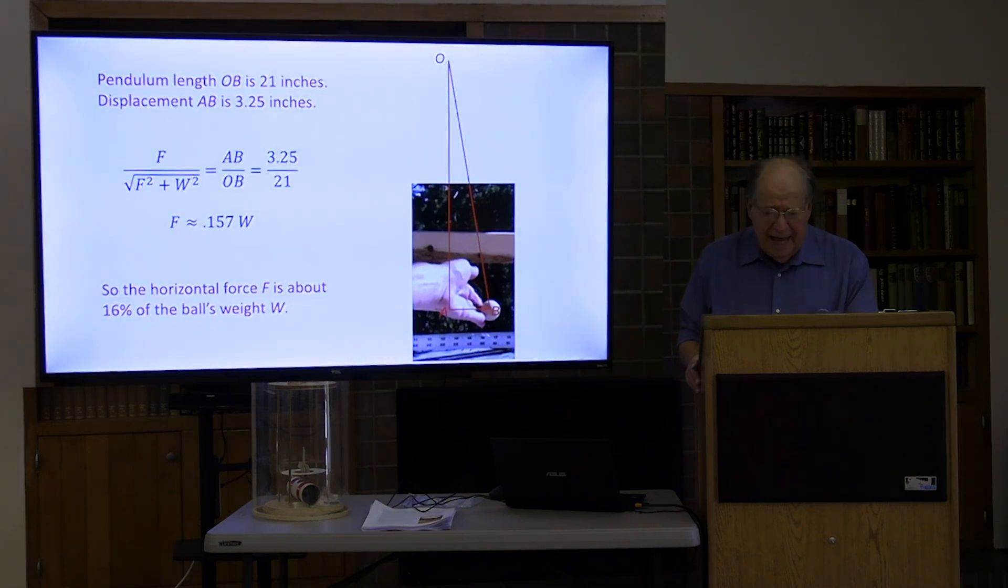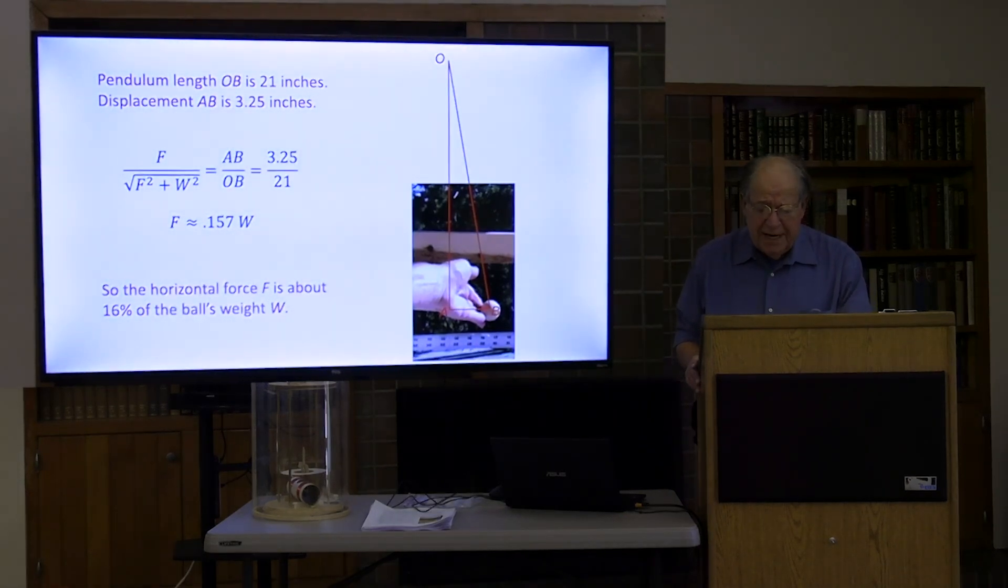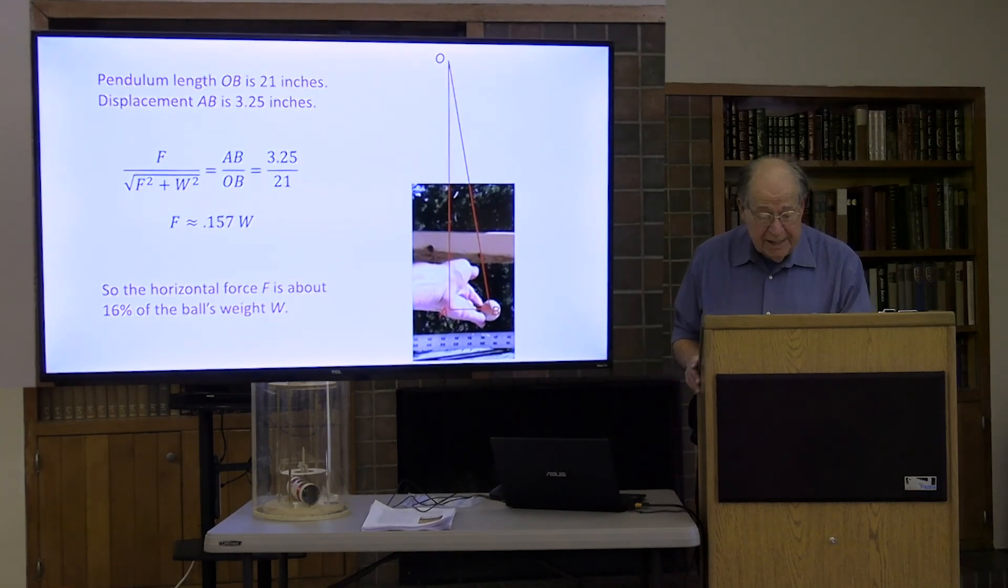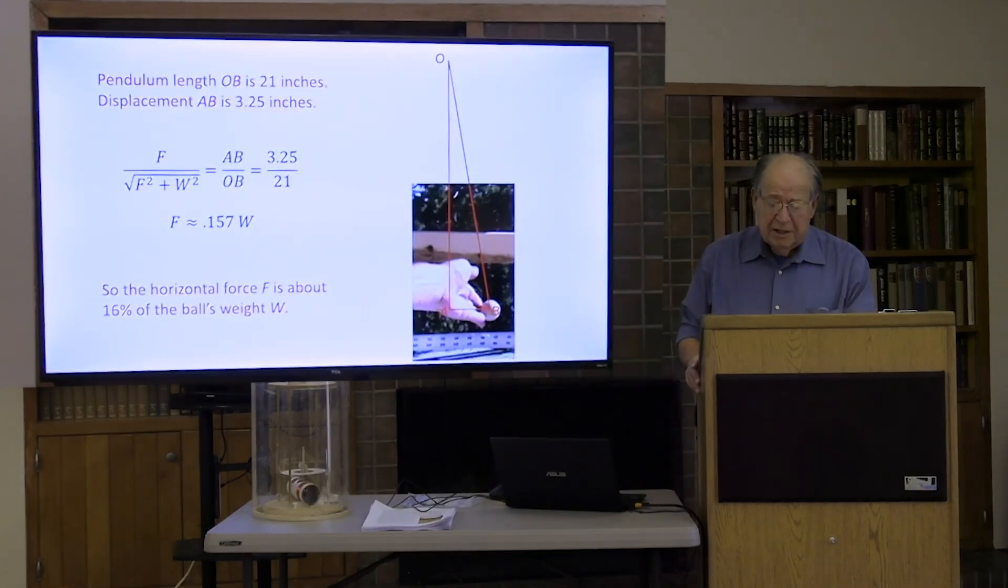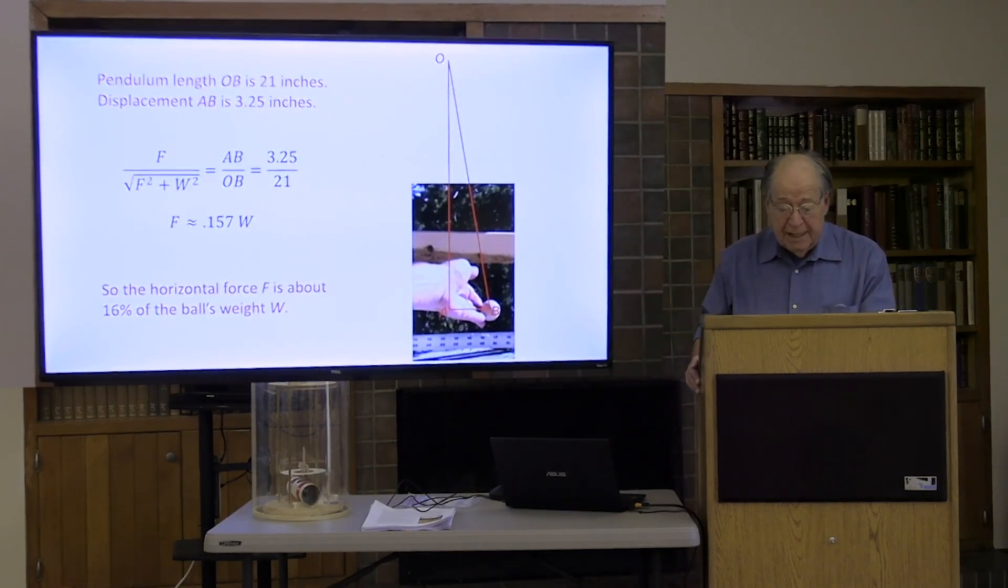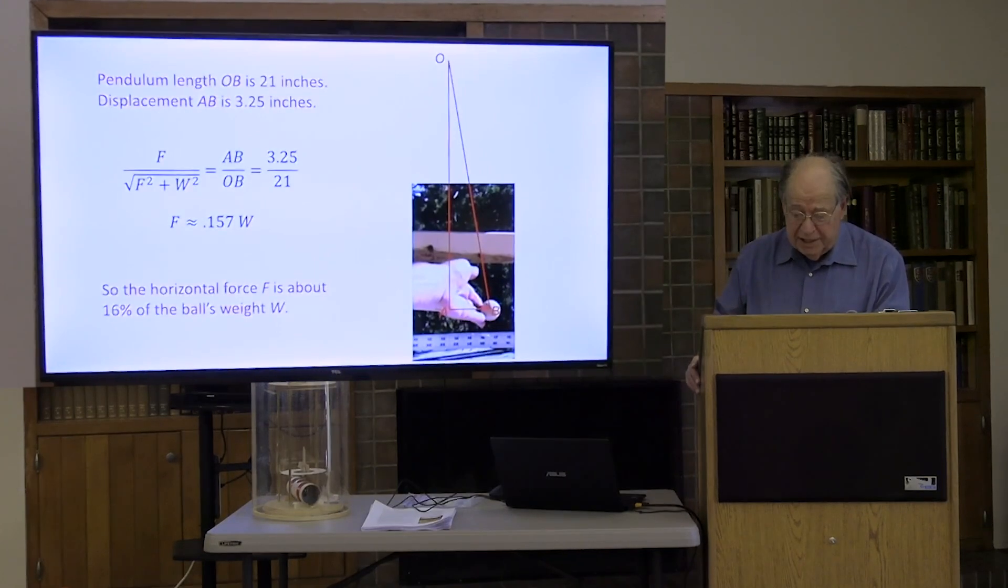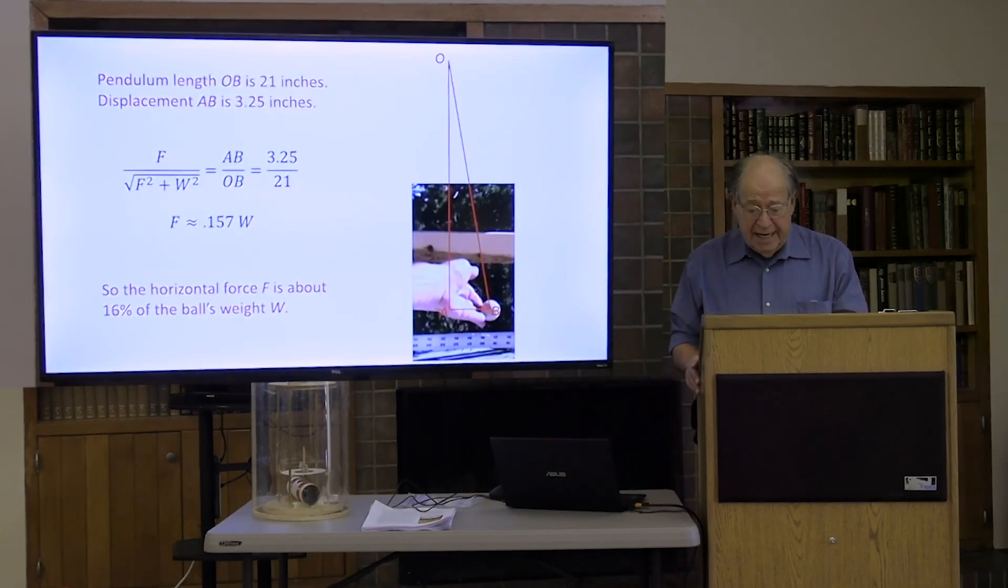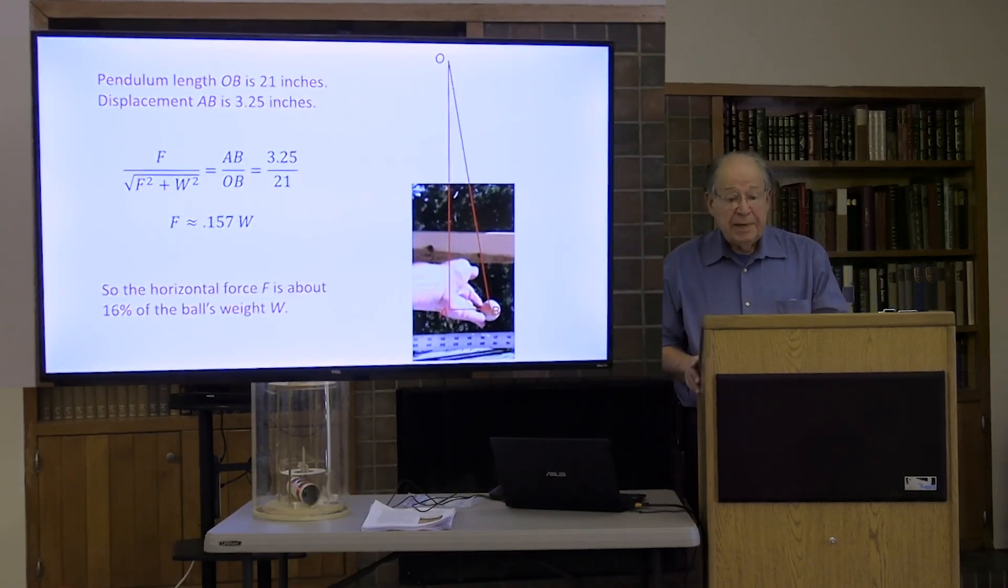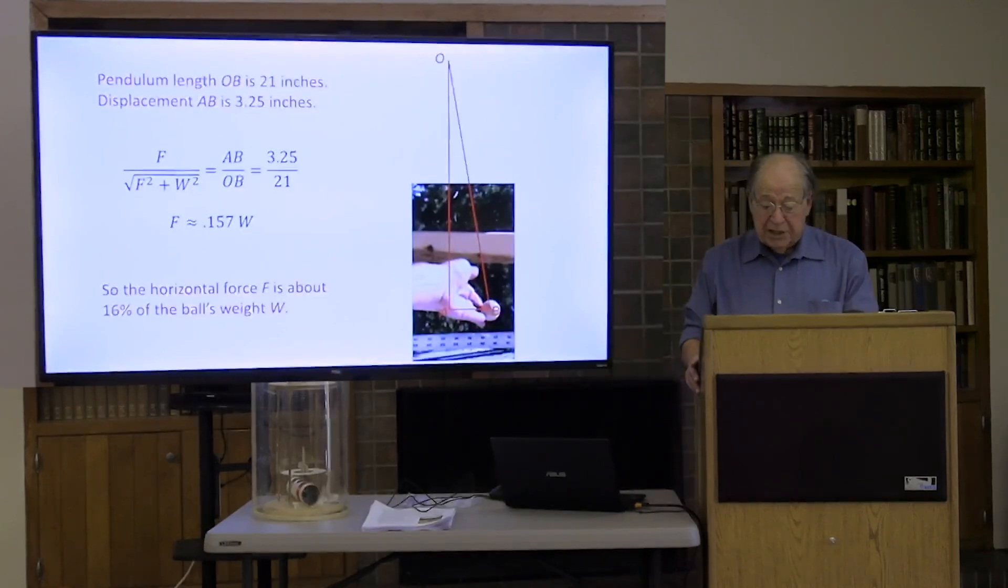From the resulting angle of deflection we can calculate the force my hand is exerting. In this case, I have displaced the pendulum three and one quarter inches from its equilibrium position. The suspension thread is 21 inches long, so a horizontal deflection of three and one quarter inches means that the applied force F is to the tension in the thread OB as three and one quarter is to 21. So you see the calculation, the horizontal force is about 16% of the pendulum's weight. So the pendulum can be used to measure a steady force.